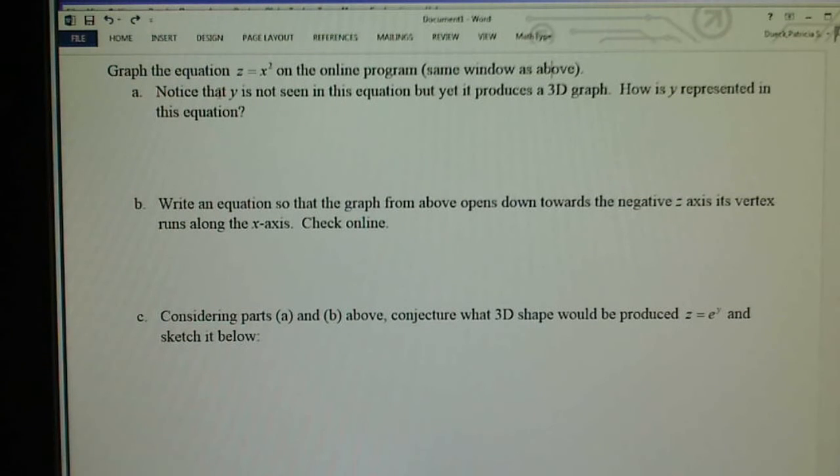So it says here notice that y is not seen. How's y represented? For all y. All y is represented here, every single one of them.